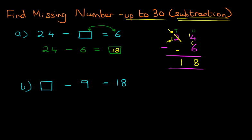Go back to the original question. We've got 24 minus 18 equals 6. So the missing number is 18. That was nice and simple.